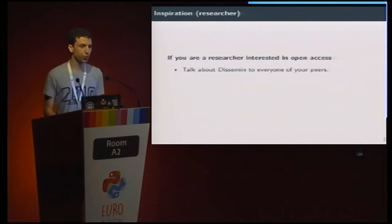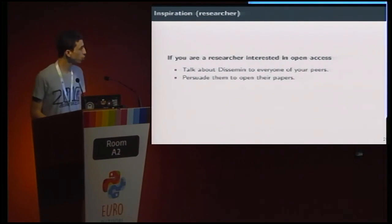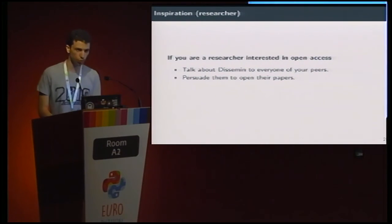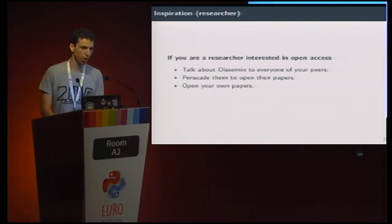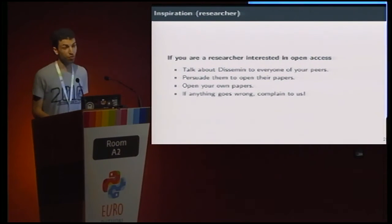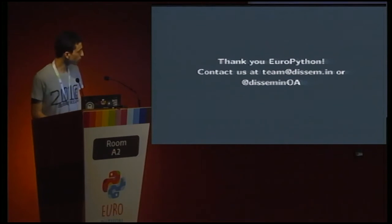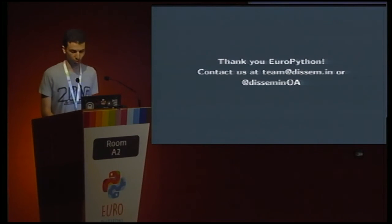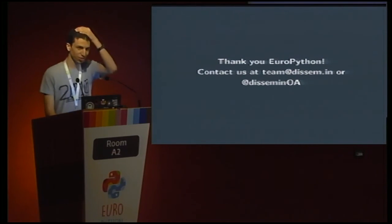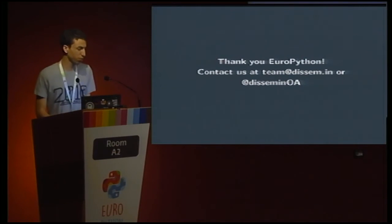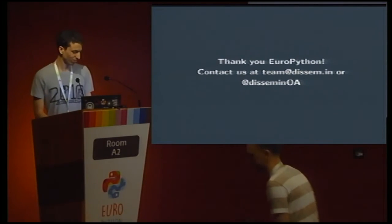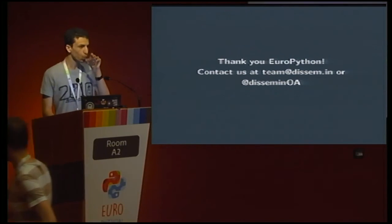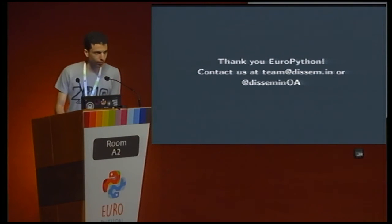And if anything goes wrong, blame us. If you're a researcher interested in open access, you could talk about dissemination to every one of your peers. You could persuade them to open their papers, because this is really important. And most of all, you should open your own papers if you have them. And if anything goes wrong, complain to us also. Thank you for this talk, and thank you EuroPython — it was really a great conference. If you have anything, you can contact us. Thank you very much.